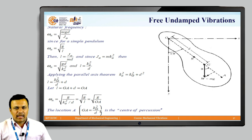If we apply the parallel axis theorem to get the value of k0 square, we can write down k0 square as kg square plus d square. We can get the l value as kg square divided by d plus d.